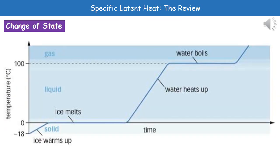A typical graph looks like this. In the bottom left we see a steady increase in temperature from minus 18 to 0°C — that's the ice warming up. At 0°C, the melting point, all the energy is used to break intermolecular bonds so the temperature stays at 0 while the ice melts. Then the temperature rises again until 100°C, the boiling point, where it levels off again as bonds between water particles are broken.